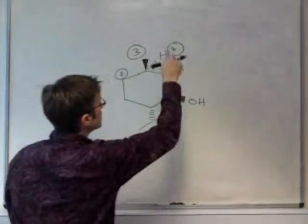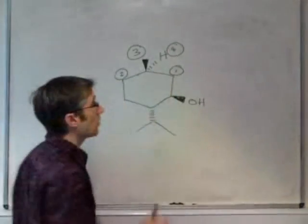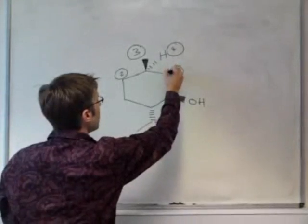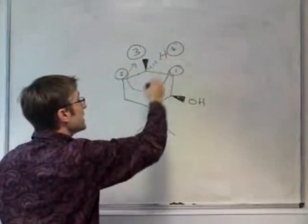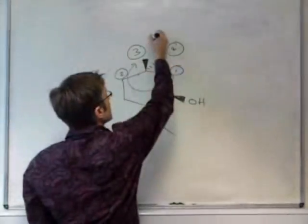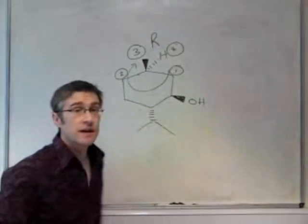We then look at the molecule with the lowest priority group pointing away from us, and we go from one to two to three. It's a right-handed circle. So this stereocenter is R.